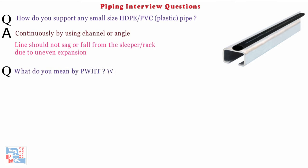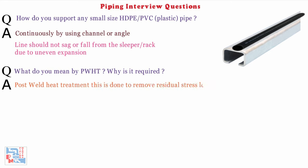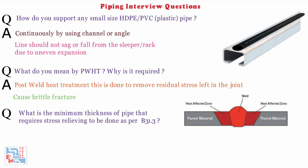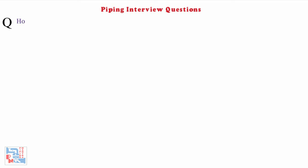Next: what do you mean by PWHT and why is it required? PWHT stands for Post Weld Heat Treatment. This is done to remove residual stress left in the joint, which may cause brittle fracture. Next: what is the minimum thickness of pipe that requires stress relieving? As per ASME B31.3, it is 19mm thick.